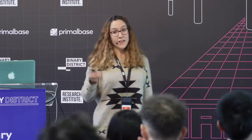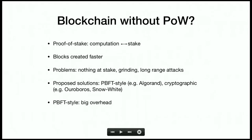There are some solutions that have been proposed — for example Algorand, Ouroboros, and Snow White. Algorand is based on PBFT, a more traditional consensus protocol where you exchange a lot of messages, so there's a big message overhead. And really, all these proposed protocols don't look at incentives and economic arguments behind their solutions. Our idea is to leverage this economic component to move away from PBFT-style consensus and have something more scalable.